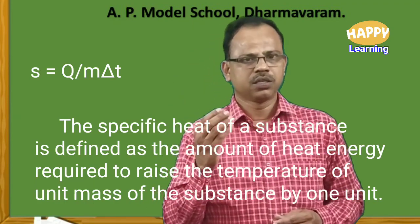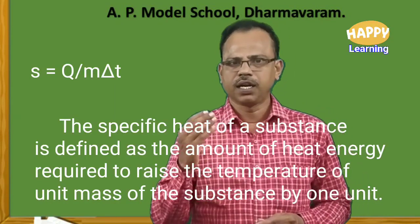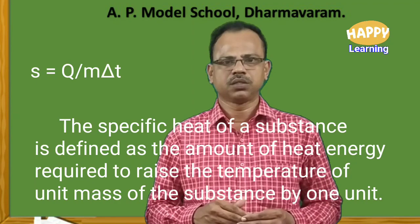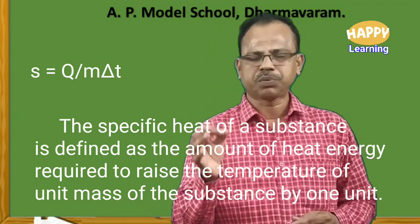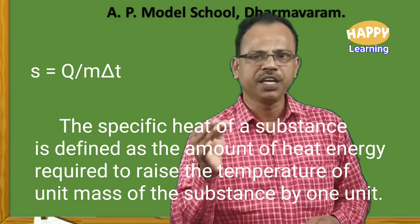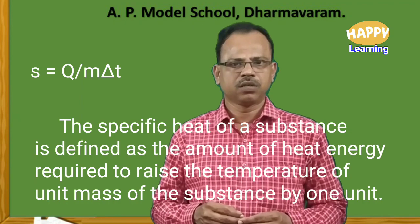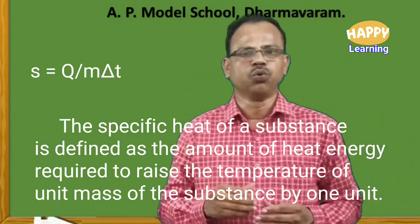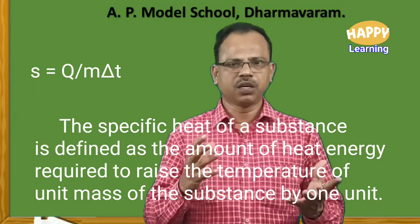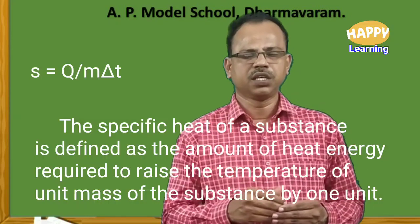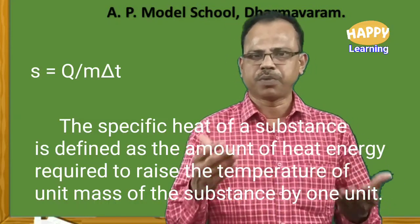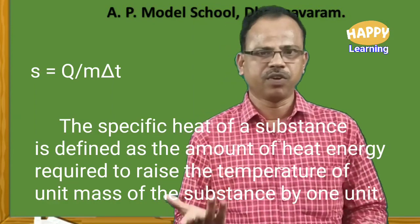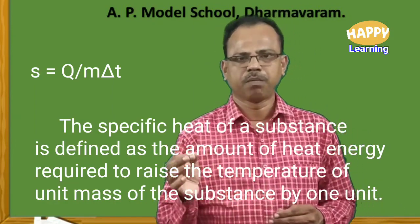That means when m equals 1 and delta t equals 1, then s will be equal to q. The specific heat of a substance is defined as the amount of heat energy required per unit mass of a substance to raise the temperature by 1 unit. In SI system, per unit mass means per kg and per unit rise of temperature means per Kelvin. In CGS system, per unit mass is per gram and per unit rise of temperature is per degree Celsius.